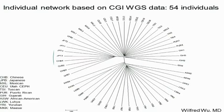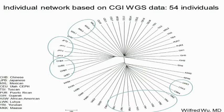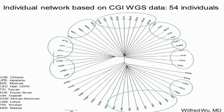Looking at sequence data displayed in a network diagram — analysis done by my graduate student Wilfred Wu — these are 54 individuals completely sequenced by Complete Genomics. Each tip is an individual from a specific location: 1000 Genomes Yorubans, the Luhya from Kenya, Chinese, Japanese, samples from Mexico, Utah CEU samples, Tuscan, Puerto Rican, and Gujarati Indians. With sequence data, as with SNP data, we can see groupings of individuals, though not everyone falls easily into those groups.